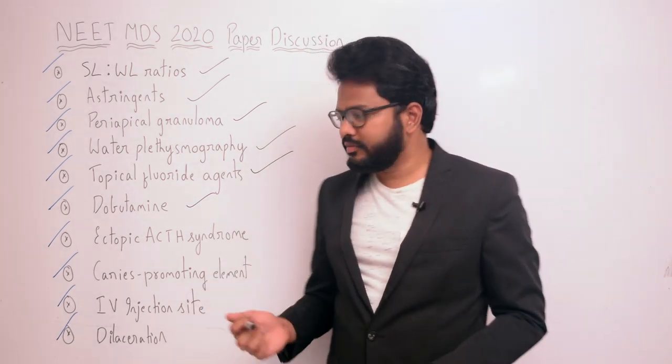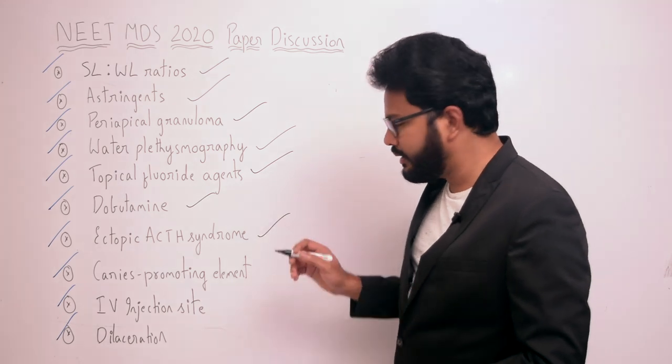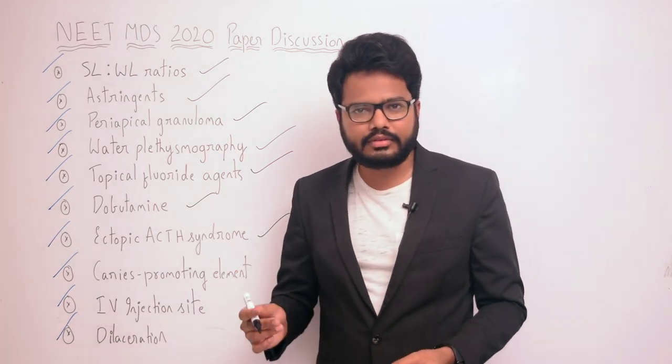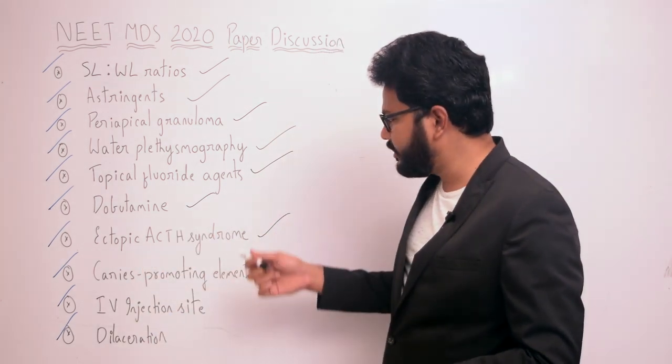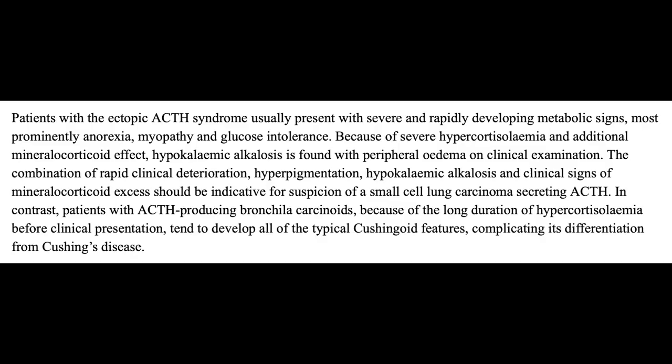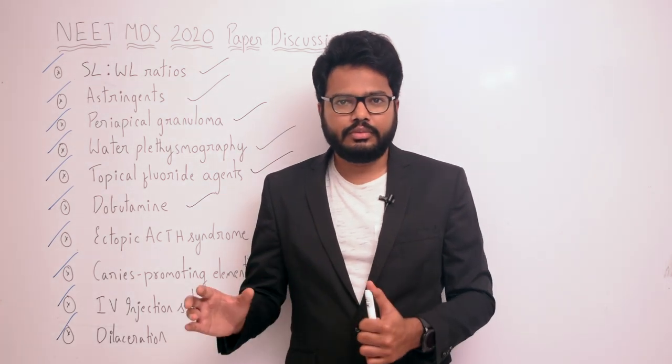Moving on to the next question related to ectopic ACTH syndrome. Patients with ectopic ACTH syndrome usually present with severe and rapidly developing metabolic signs, most prominently anorexia, myopathy, and glucose intolerance. Cushing's syndrome due to ectopic ACTH secretion is a form of ACTH-dependent Cushing's syndrome caused by excess secretion of ACTH by a benign, or more often malignant, non-pituitary tumor.